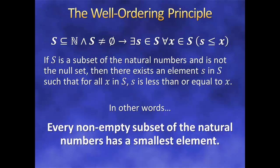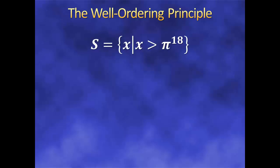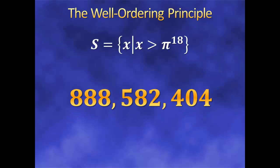We may not know what the smallest element is. Perhaps I want to know the smallest natural number greater than π to the eighteenth power. I may not know what that is off the top of my head, but I know it's guaranteed to exist. By the way, it would be 888,582,404 — just in case you were wondering.